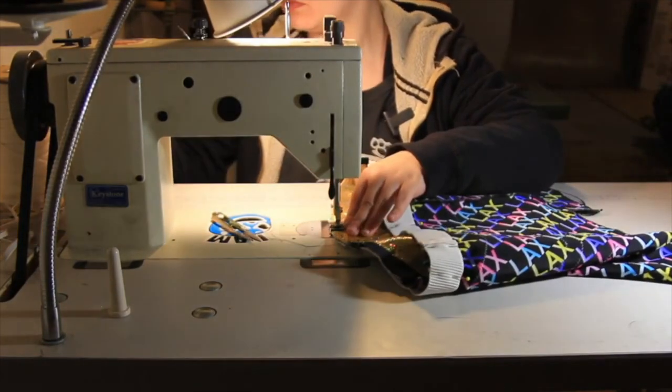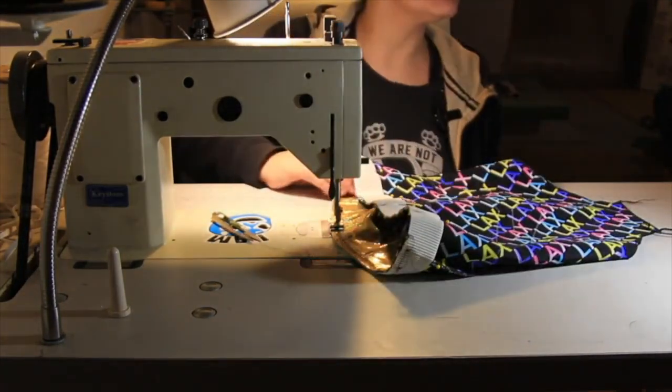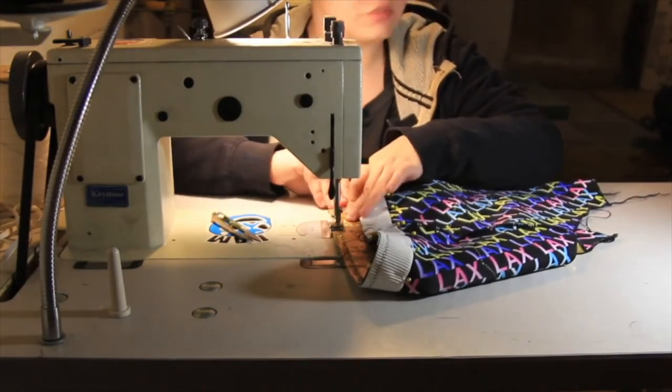Once the elastic is pinned down, we sew a single basting stitch about half inch from the top edge, all the way around the waistband.